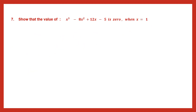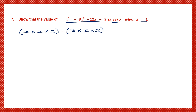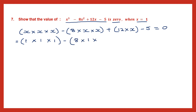Question 7: show that the value of this expression is 0, and that x is 1. When x is 1, this expression should be 0. So let's work it out and see. x cubed will be x into x into x — that's 3 x's — minus 8x squared, which is 8 into x into x, plus 12 into x, minus 5. We have to show that all this is equal to 0. So let's substitute the value — x is 1.